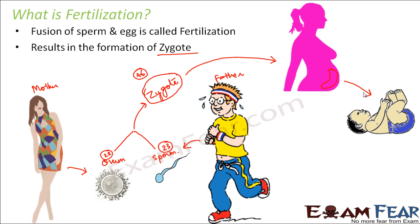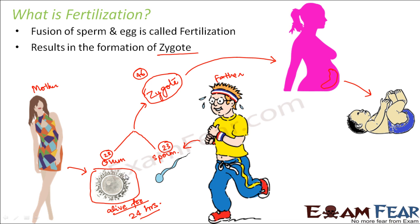An important thing to remember is that the unfertilized egg remains alive for only 24 hours. So if fertilization has to take place, the sperm needs to fuse with it within those 24 hours. After that, the egg will no longer be alive, so even if the sperm reaches the fallopian tube, there will be no egg to fertilize. Therefore no zygote will be formed and no baby will be born. A woman becomes pregnant only when the sperm and the ovum meet.